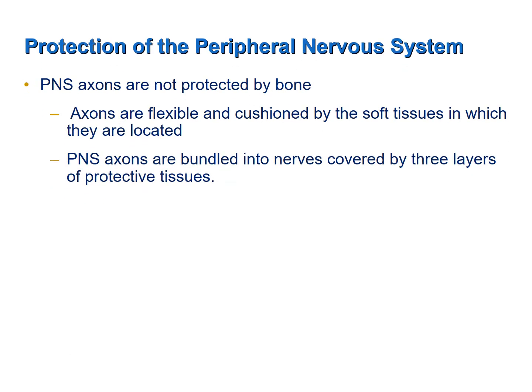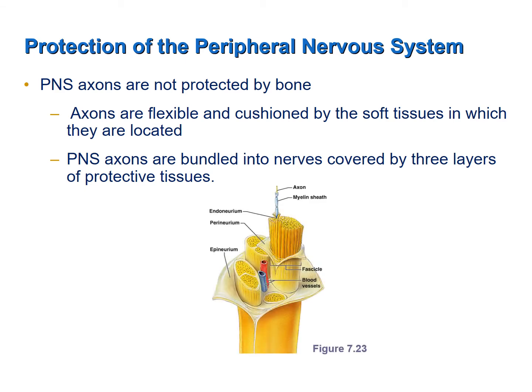In the peripheral nervous system, we do not have the protection of bone as we do in the central nervous system. The brain is surrounded by cranial bones of the skull. The spinal cord is surrounded by vertebrae of the vertebral column. In the peripheral nervous system, since we do not have bone to protect the axons, the axons are bundled together between three layers of soft, flexible, cushioning tissue into a structure that we call a nerve.